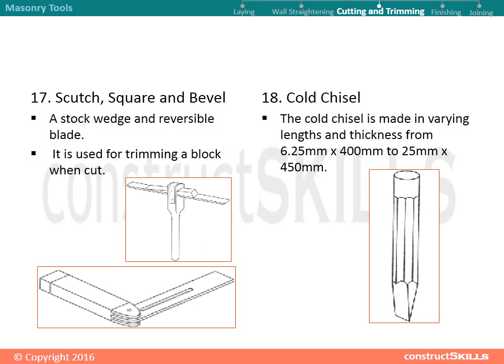Cold chisel. The cold chisel is made in varying lengths and thicknesses, ranging from 6.25 mm by 400 mm to 25 mm by 450 mm.